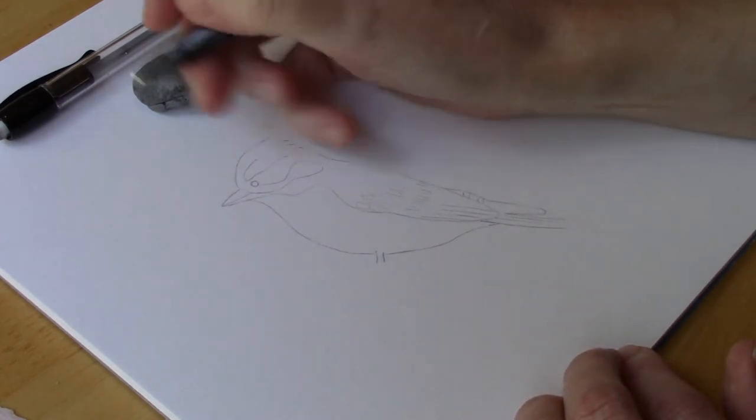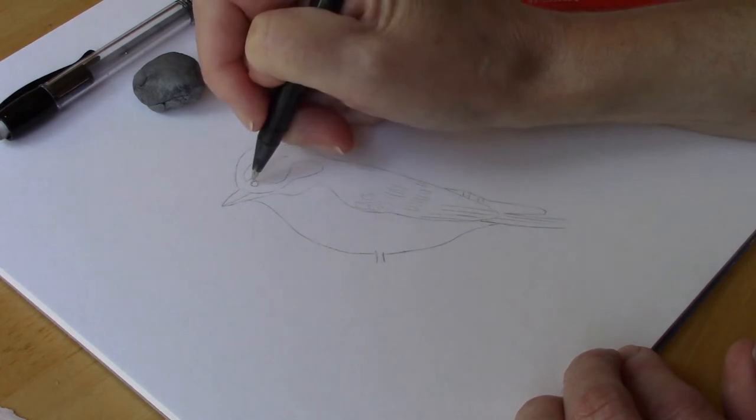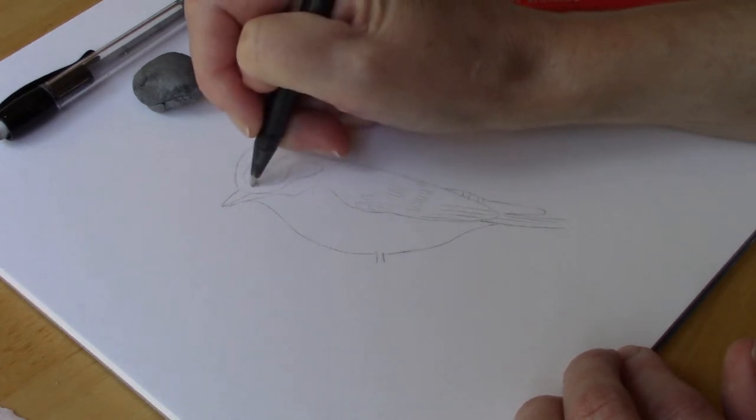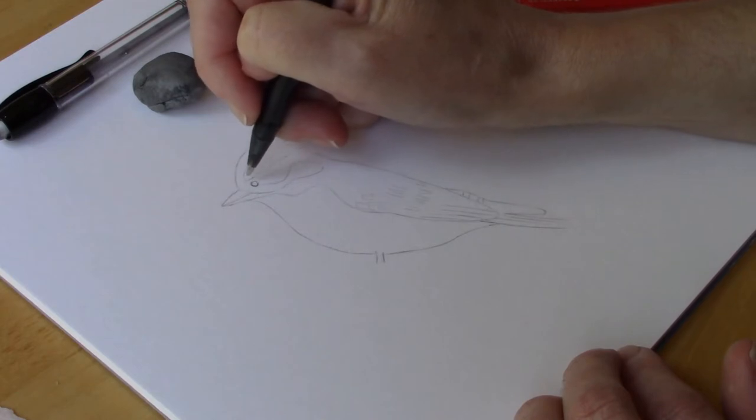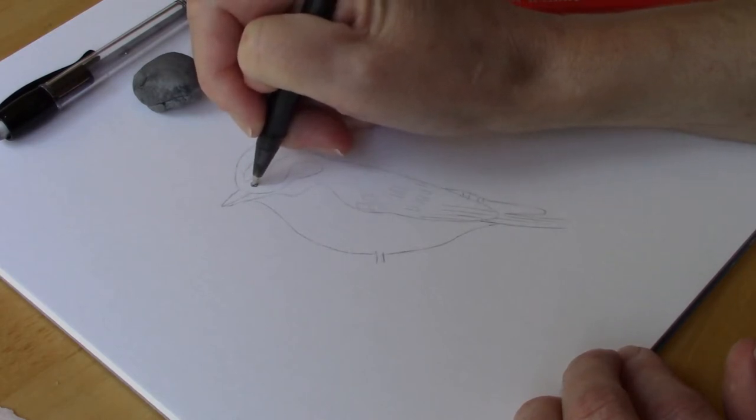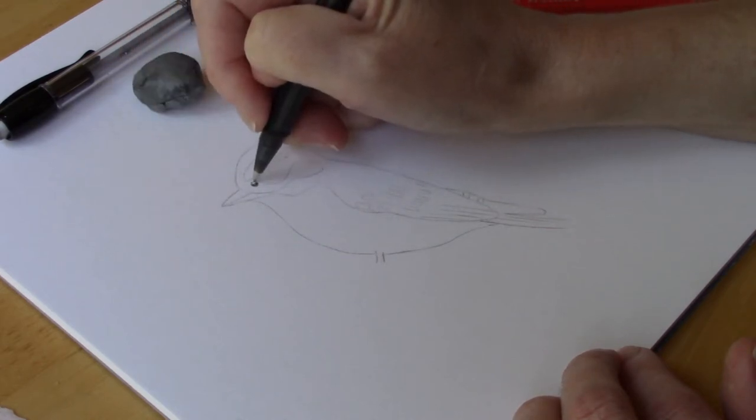I'm going to be starting with the eye. I always like to start my drawings with the eye when I do birds because I figure that way if I mess up the eye I've messed up everything. So I'm going to just use my black pen.